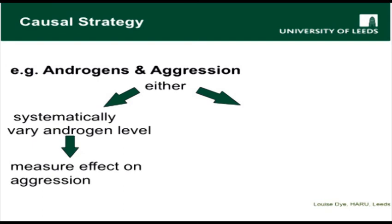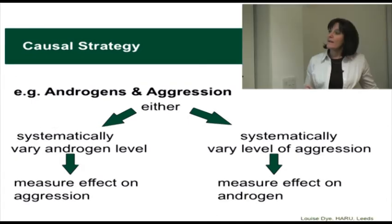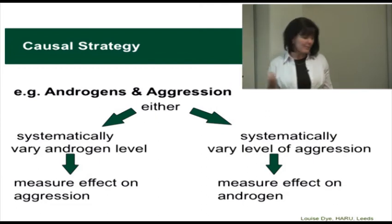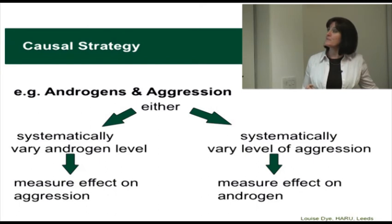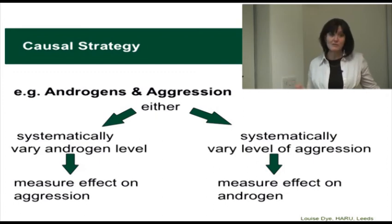Going back to the example about androgens and aggression, if we wanted to adopt a causal strategy, we could either systematically vary the androgen level and measure the effect on aggression, or we could systematically vary the level of aggression and measure the effect on androgens. In the first case, treating androgen level as the independent variable, we measure the effect on aggression — the dependent variable. If we were to induce aggression in people by putting them in aggressive situations, we would be treating aggression as the independent variable, and the androgen level they produced in response would be our dependent variable.